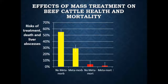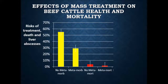Metaphylaxis — mass treatment coming off the truck — decreases morbidity by 50 percent. If you're expecting 40 percent pull rates, you'll have 20 with metaphylaxis. If you're expecting 20 percent, you'll have 10. You can use that in your break-even spreadsheets. But there are a lot of things that go into that decision: weather, labor, value of the calves, weight of the calves — all of that factors into whether you can economically pull the trigger on metaphylaxis.